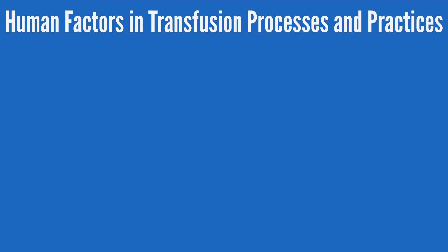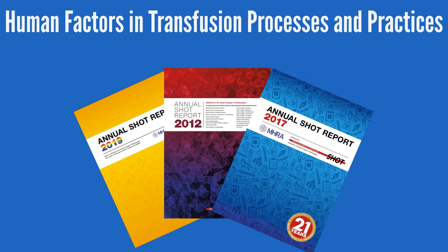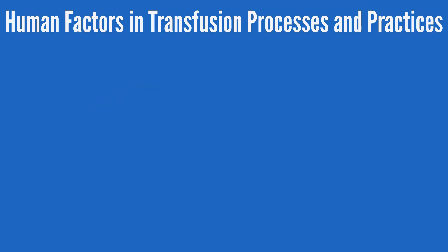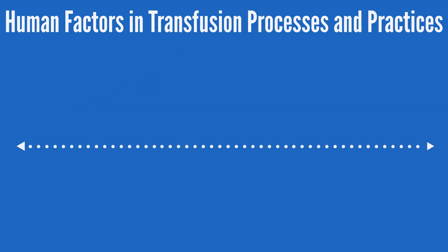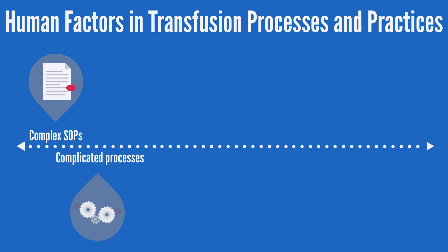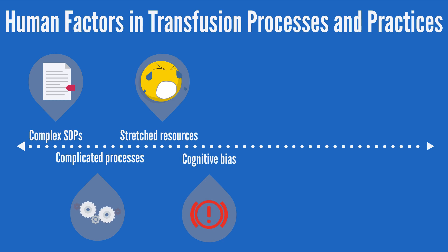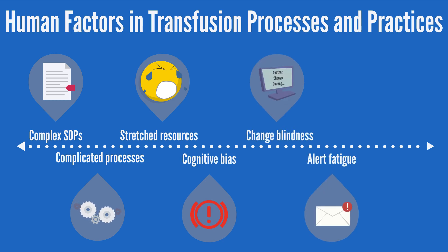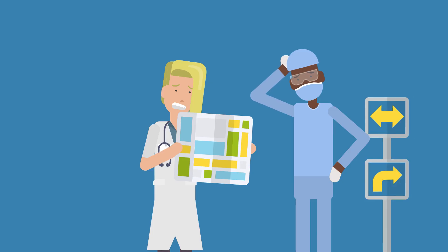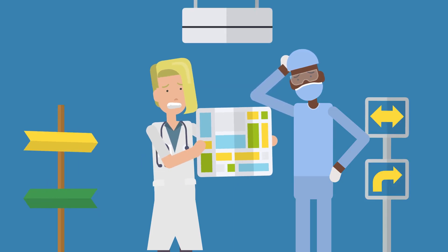Human factors-driven errors in transfusion have been identified through years of SHOT reporting due to processes and practices, and these can include complex SOPs, complicated processes, stretched resources, cognitive bias, change blindness, alert fatigue, and situational awareness. These factors can all result in deviations.